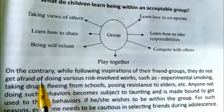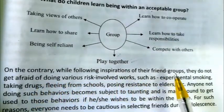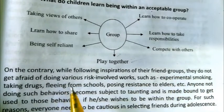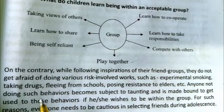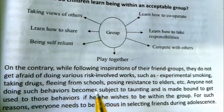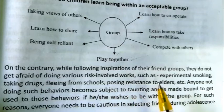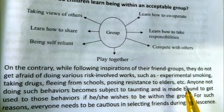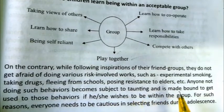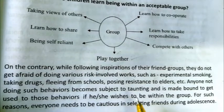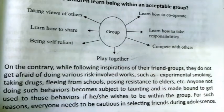On the contrary, while following inspirations of their friend groups, adolescents do not get afraid of doing various risk-involved activities, such as experimental smoking, taking drugs, skipping school, resistance to elders, etc. Anyone not doing such behaviors becomes subject to taunting and is made bound to get used to those behaviors if he or she wishes to remain within the group. For such reasons, everyone needs to be cautious in selecting friends during adolescence.